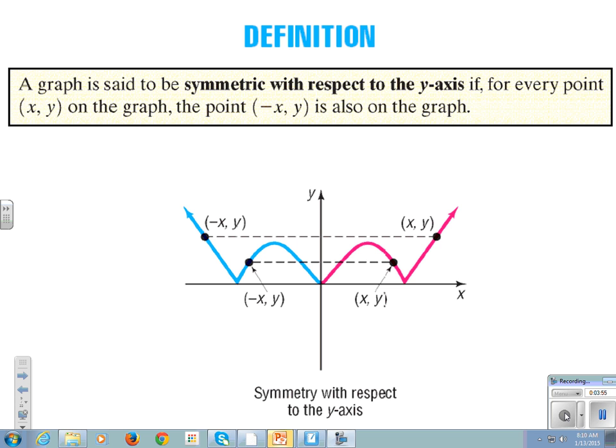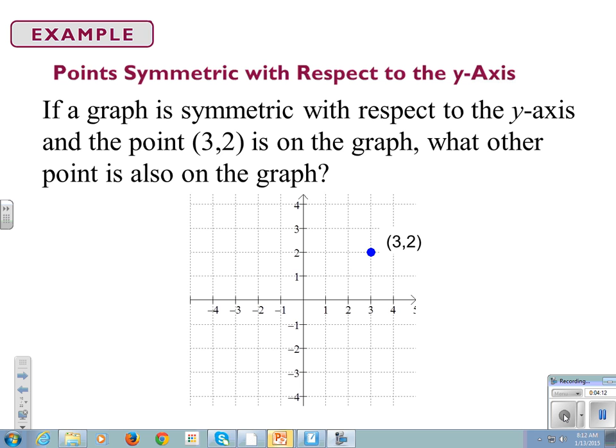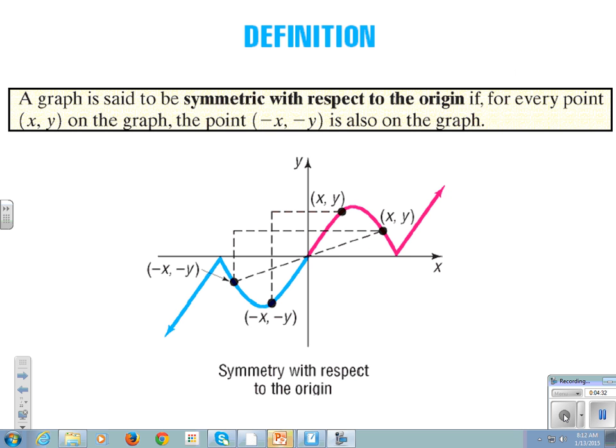A graph is said to be symmetric to the y-axis if for every point x, y on the graph, the point negative x, y is also on the graph. So let's see what that looks like. Back to our friend 3, 2. If it's symmetric with respect to the y-axis, then what point is also on our graph? Yes, negative 3, 2.